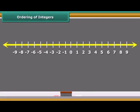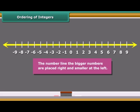Let us again observe the integers which are represented on the number line. We know that nine is greater than five and on the number line is four points right of five. Similarly, five is greater than zero so placed right to it. Since zero is to the right of minus two, it is greater than minus two. Again, minus two is on the right of minus seven. So, minus two is greater than minus seven. Thus, we see that on the number line, the bigger numbers are placed right and smaller at the left.